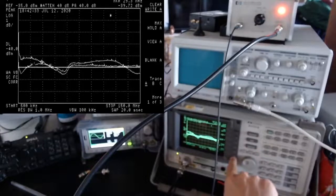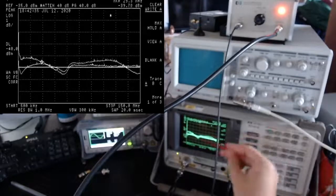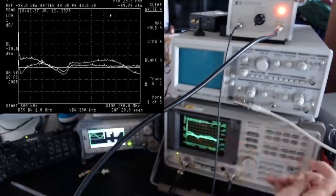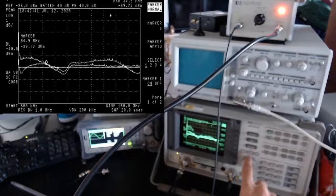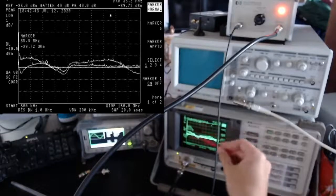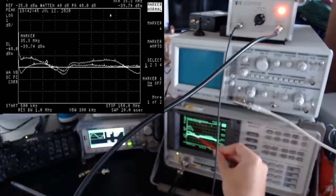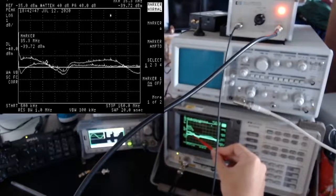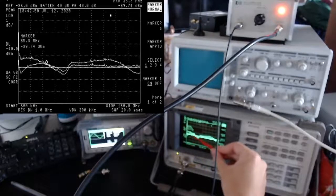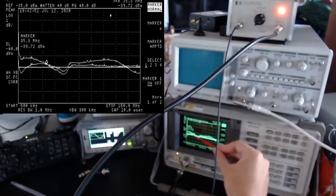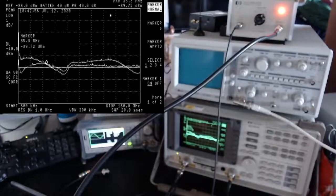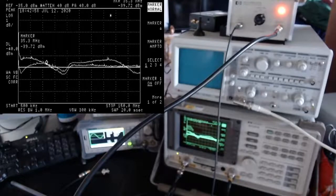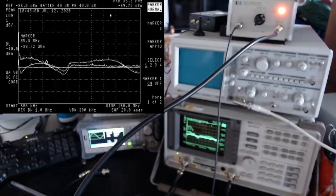So as you can see, for example, here around this point, we have basically around 35 MHz. We have that tracking generator and the response of the amplifier here are basically equal, which means that the amplifier in this point is doing a perfect 40 dB amplification.